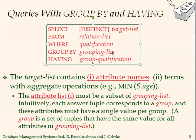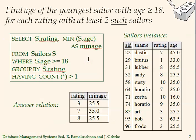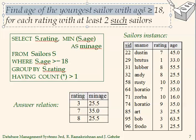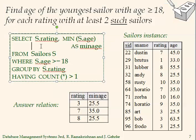HAVING eliminates groups obtained after the grouping criteria. If we don't have a WHERE it's okay, but HAVING requires a GROUP BY — you cannot have HAVING without GROUP BY. Here is an interesting query: find the youngest sailor with age greater than 18. If I only implement that part and ignore the next line, I will have an error.